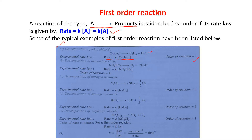Examples of first order reactions: (1) Decomposition of ethyl chloride: C₂H₅Cl → C₂H₄ + HCl. It is experimentally shown that rate = K[C₂H₅Cl]^1, so the order is 1. (2) Decomposition of ammonium nitrite: NH₄NO₂ → N₂ + 2H₂O. The experimental rate law gives rate = K[NH₄NO₂], so it is also first order. Other examples: N₂O₅ (rate = K[N₂O₅], order 1), H₂O₂ (rate = K[H₂O₂], order 1), and SO₂Cl₂ (rate = K[SO₂Cl₂], order 1).